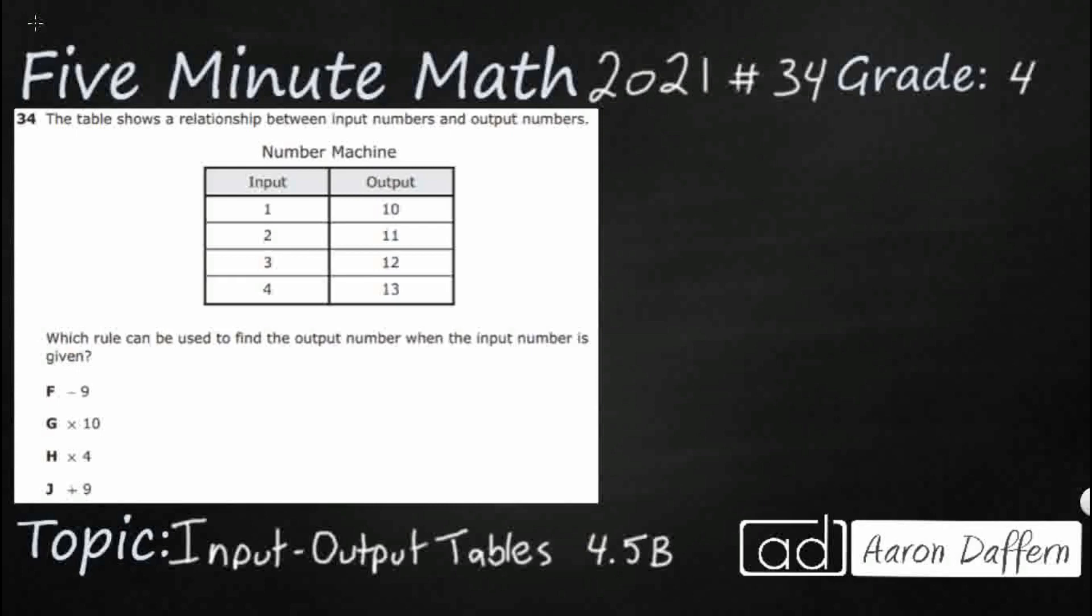So we have a table here and we have some input numbers and some output numbers and we have a number machine. So the only thing we're missing is the rule. They're going to give us four different rules we need to look at and we need to see which one helps us find the output when we use the input to start with. So that means we're looking side to side. We're not looking up and down.